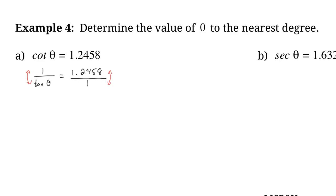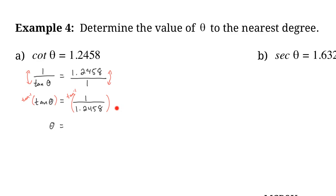Flipping the fractions gives us tan θ over 1 equals 1 over 1.2458. Now we solve for angle θ using the inverse tan button (tan to the power of negative 1, or second function tan / shift tan on your calculator). Type tan⁻¹(1 ÷ 1.2458) into your calculator, and you should get θ ≈ 38.75 degrees.